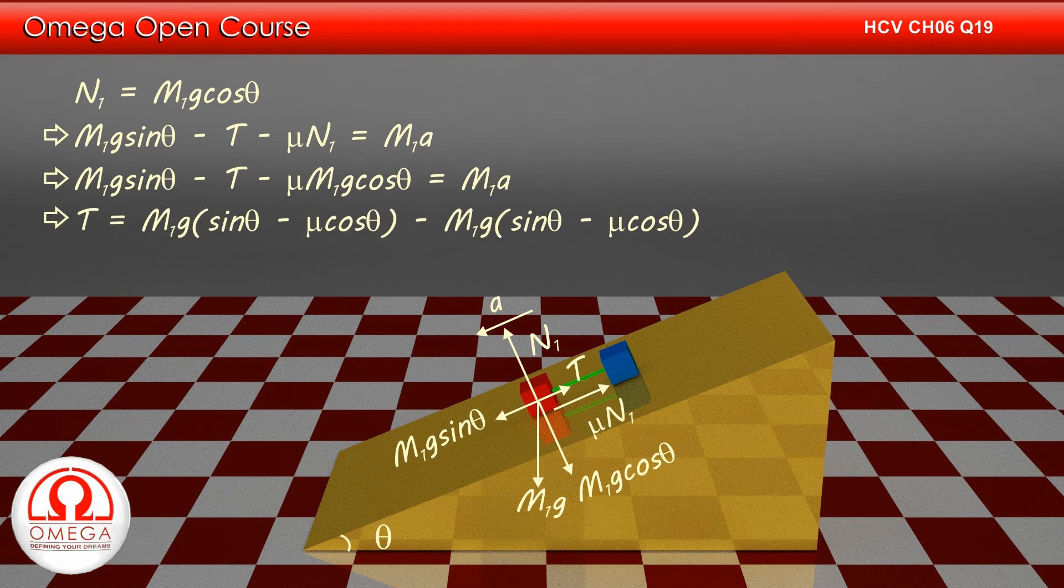Putting the value of a, we get T equals M1 g sin theta minus mu cos theta minus M1 g cos theta minus M1 g sin theta minus mu cos theta. Thus, T equals 0. This is the answer to second part of the question.